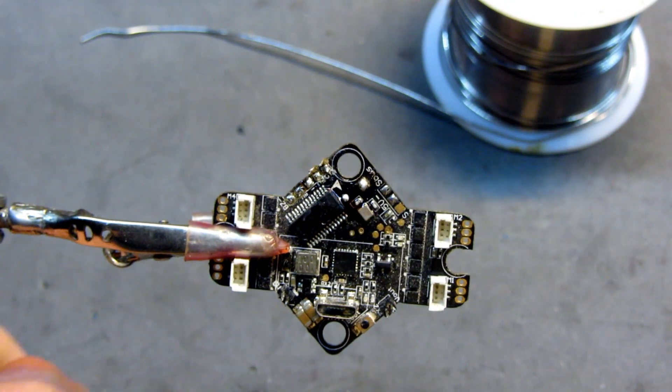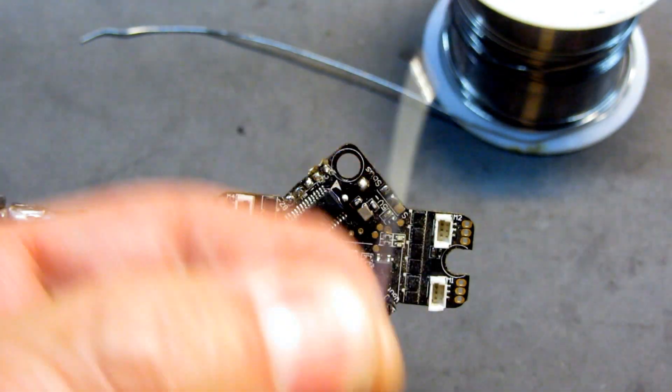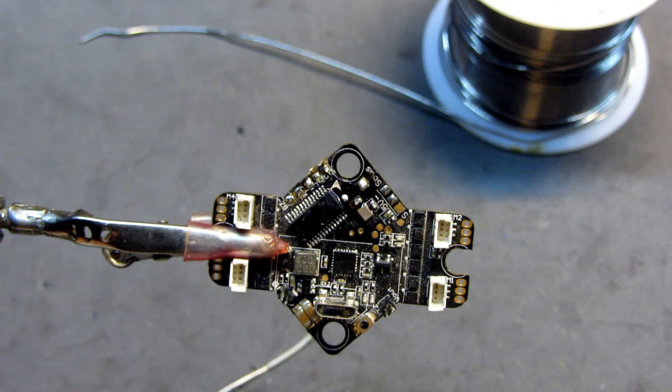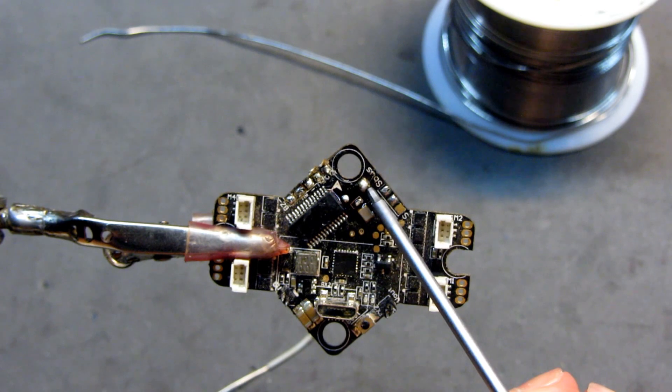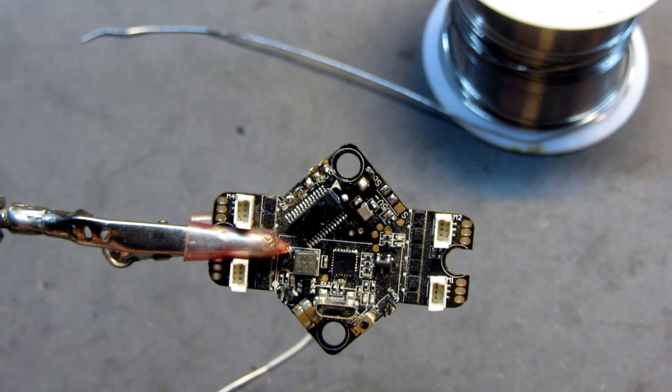All right guys, so here's the antenna. It's off. We're going to assume it was broken, bad, cut off, something got caught in a prop. Anyway, what you have left here, guys, is you have that small solder pad for your center element and you have the larger solder pad for your ground. So let's go ahead and get a new antenna prepped up.